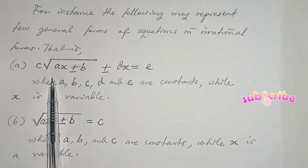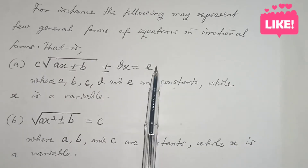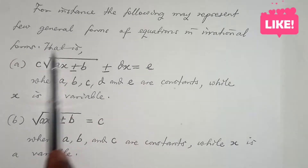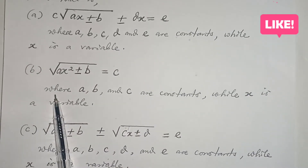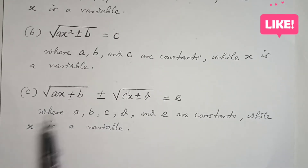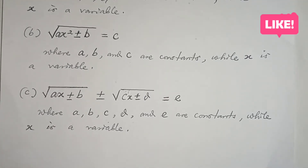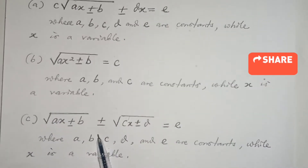It can appear in this form: c times the root of (ax plus or minus b) plus or minus dx equals e, where c, a, b, d and e are assumed to be constants and x is the variable. Similarly it could also appear in a second manner, and in a third manner. What I want to do in this video is not only tell you what equations in irrational forms are, but also to solve problems on each of these types.